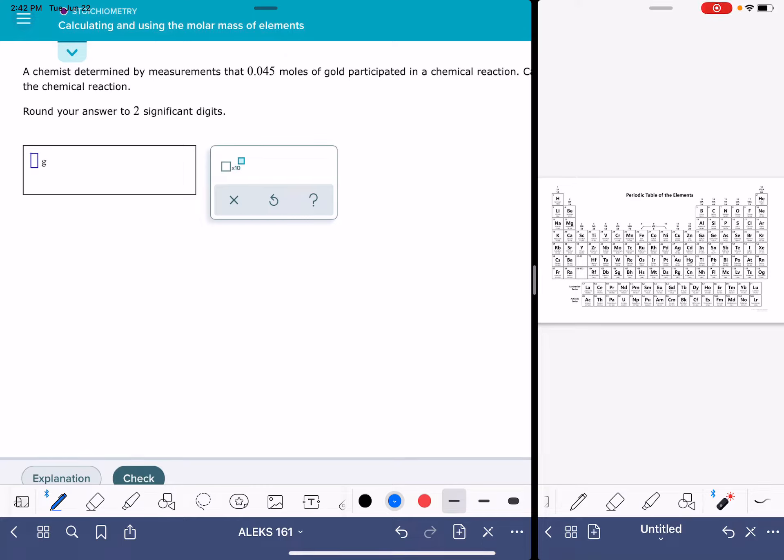In this video, I'll show you how to solve the ALEKS problem called calculating and using the molar mass of elements. In this problem, it's going to give you a particular element. I am being assigned to work with the element gold, which has the symbol Au.